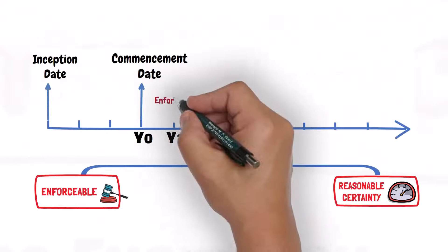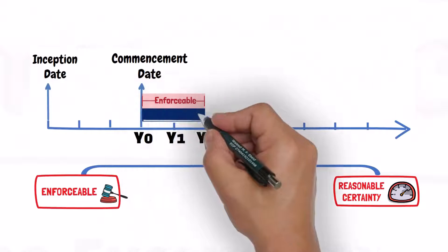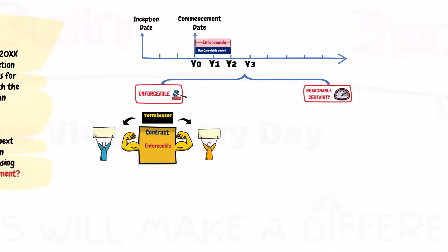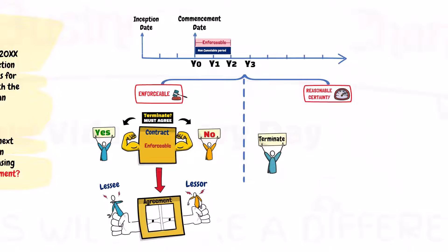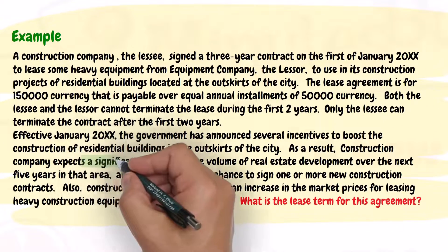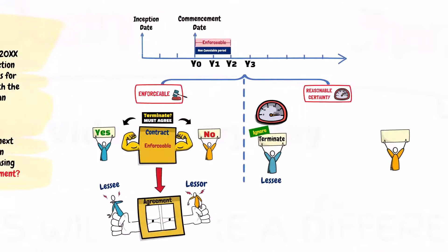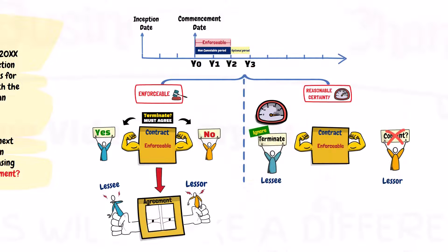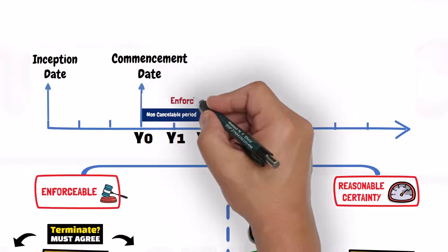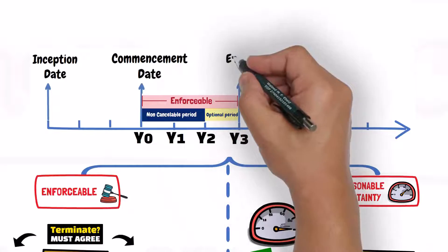The lease is enforceable during the first two years, which is the non-cancellable period of the lease, as neither party can terminate during these first two years. In addition, there is a reasonable certainty that the lessee will not exercise the option to terminate the lease. This is due to the expected increase in the real estate development business and the expected increase in the market prices of heavy equipment. Since the lessor cannot force the lessee to terminate the lease, the lease remains enforceable for the third year as well. Therefore, the lease term is the whole three years of the contract.